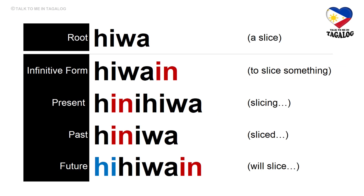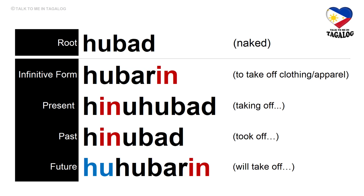Root word: hiwa — meaning a slice. Infinitive form: hiwain — to slice something. Present tense: hinihiwa — slicing. Past tense: hiniwa — sliced. Future tense: hihiwain — will slice something.